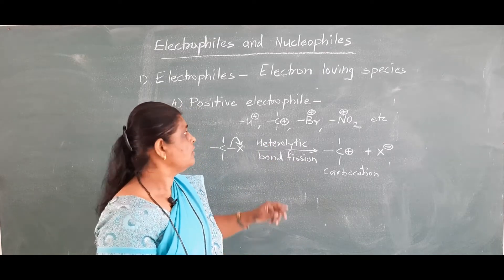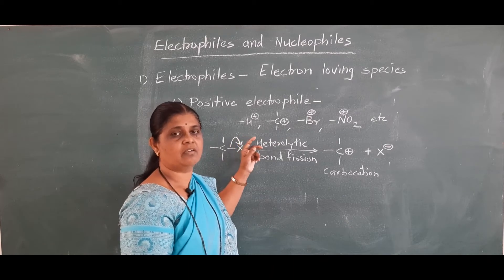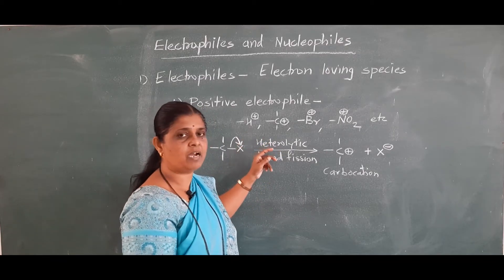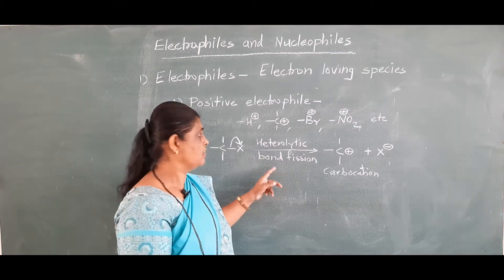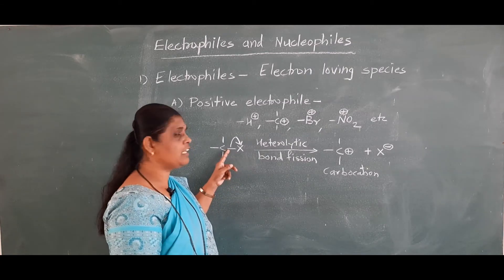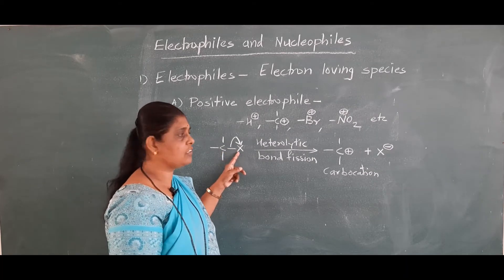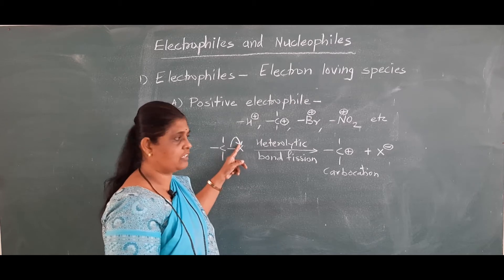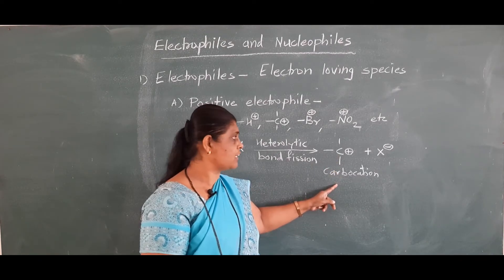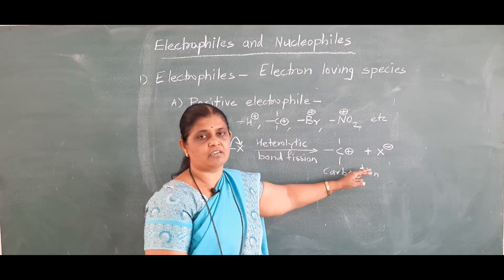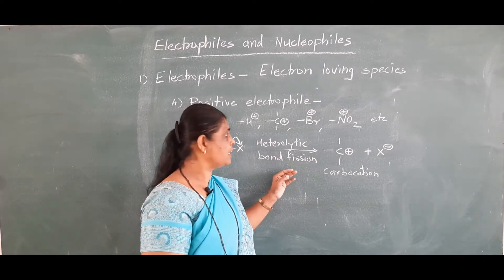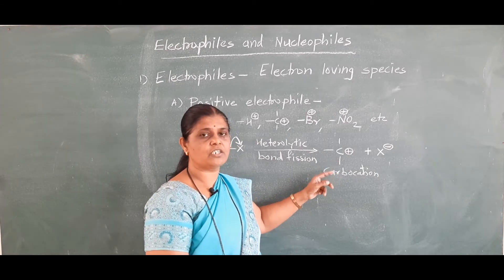Electrophiles have deficiency of electron pair. Electrophiles are obtained by heterolytic bond fission. Suppose that is an organic compound in which carbon is attached to a more electronegative atom, and the shared electron pair between carbon and that halogen migrates towards the halogen atom. We get an electron deficient carbon, known as carbocation. The other ion is a negatively charged ion. Thus, electrophiles are obtained by heterolytic bond fission and they carry positive charge. These are the positive electrophiles.